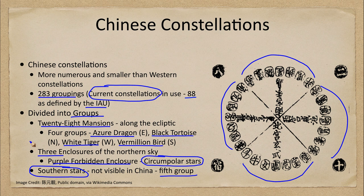Why were those stars so important? Because they were the ones that always stayed above the horizon. That's very different from Western culture, where the prominent constellations are those along the ecliptic — the path of the sun — the constellations that the sun, moon, and planets pass through over the course of the year. In Chinese culture, the most important stars were those closest to the pole.